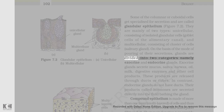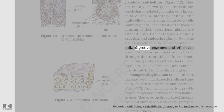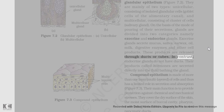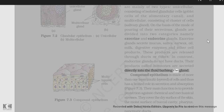On the basis of the mode of pouring of their secretions, glands are divided into two categories: exocrine and endocrine glands. Exocrine glands secrete mucus, saliva, earwax, oil, milk, digestive enzymes, and other cell products. These products are released through ducts or tubes. In contrast, endocrine glands do not have ducts. Their products called hormones are secreted directly into the fluid bathing the gland.